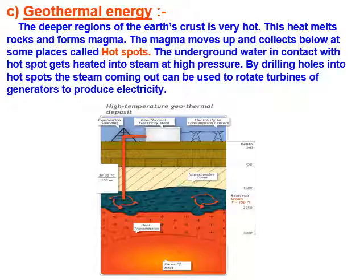Geothermal energy: 'geo' means earth and 'thermal' means heat. The deeper region of the earth's crust is very hot. This heat melts rocks and forms magma. The magma moves up and collects below the surface at places called hot spots. Underground water in contact with hot spots gets heated into steam at high pressure. By drilling holes into hot spots, the steam coming out can be used to rotate turbines of a generator to produce electricity.